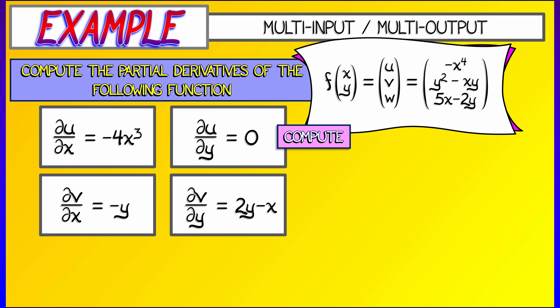Lastly, I look at w. What's the partial of w with respect to x? That's just 5. What's the partial of w with respect to y? That's just minus 2. Easy enough.